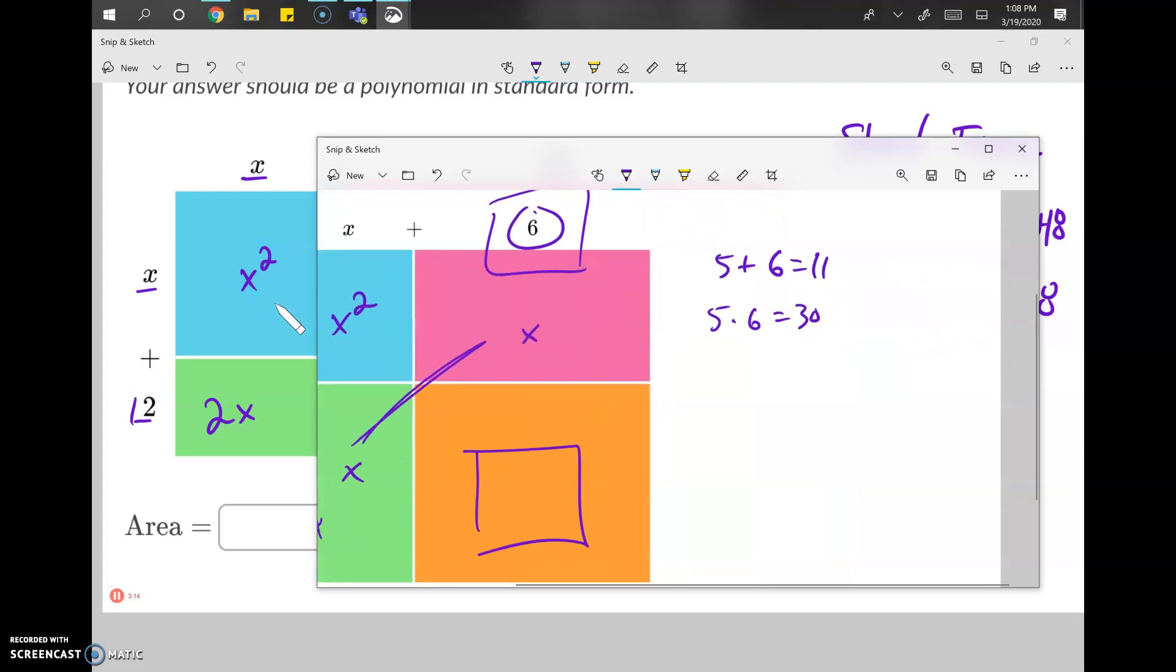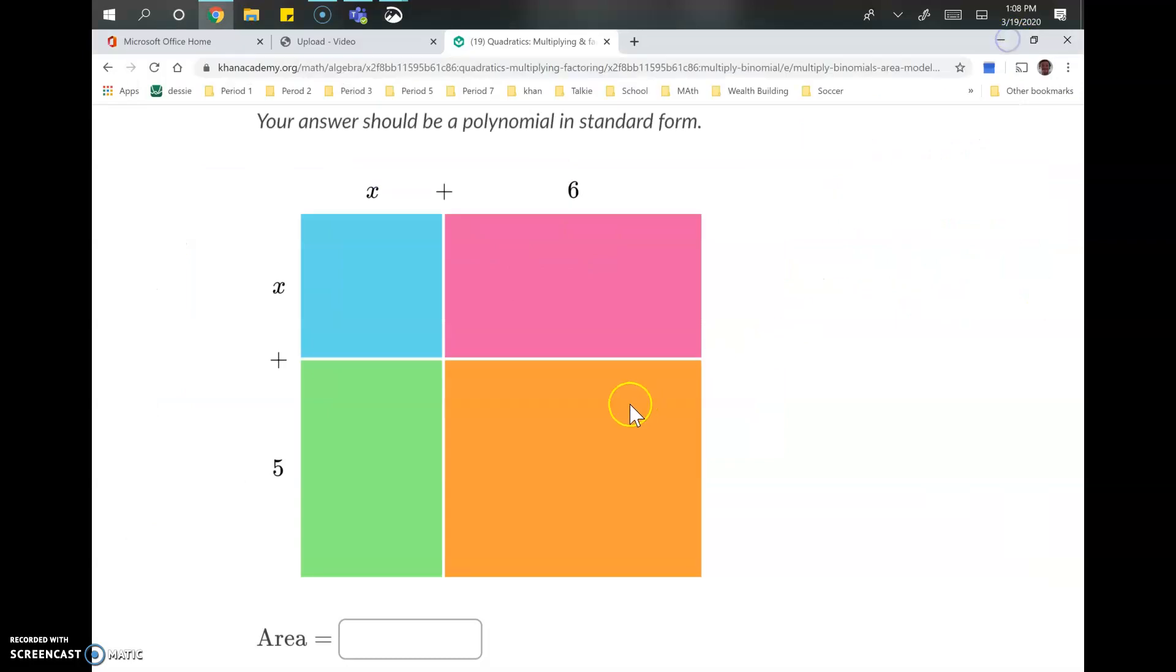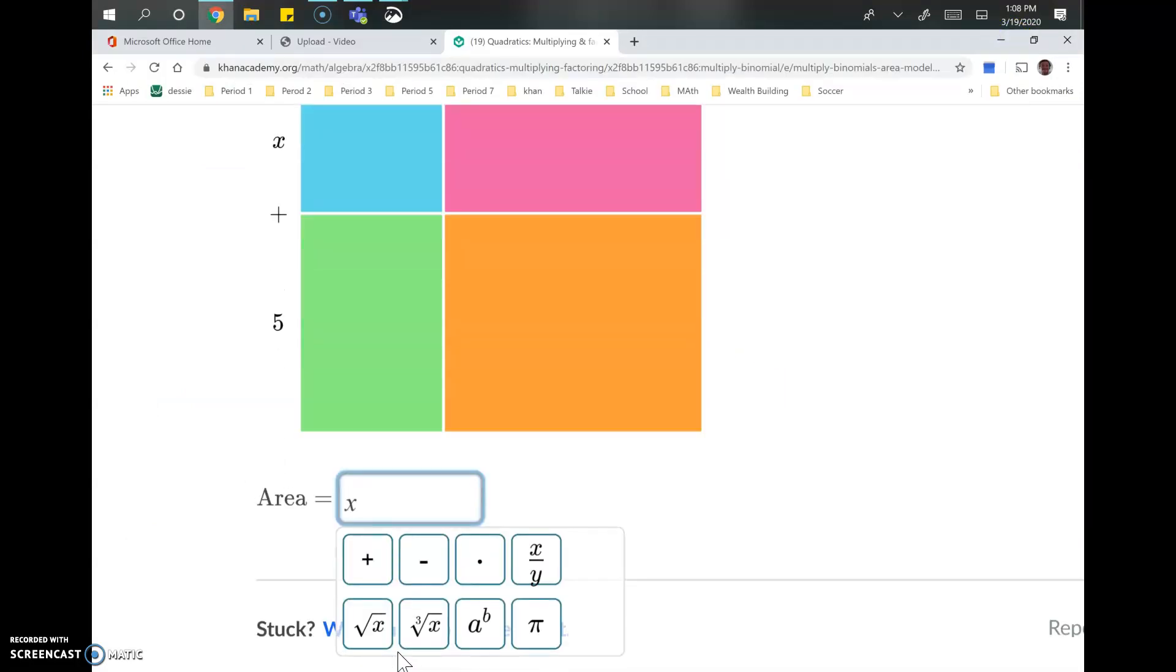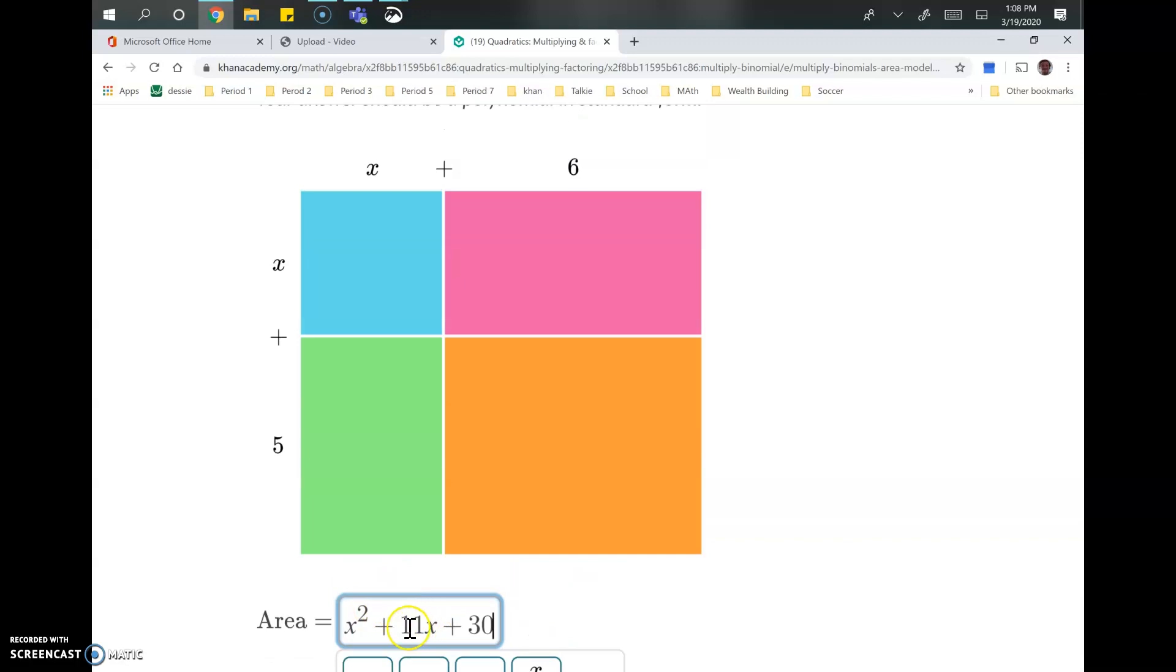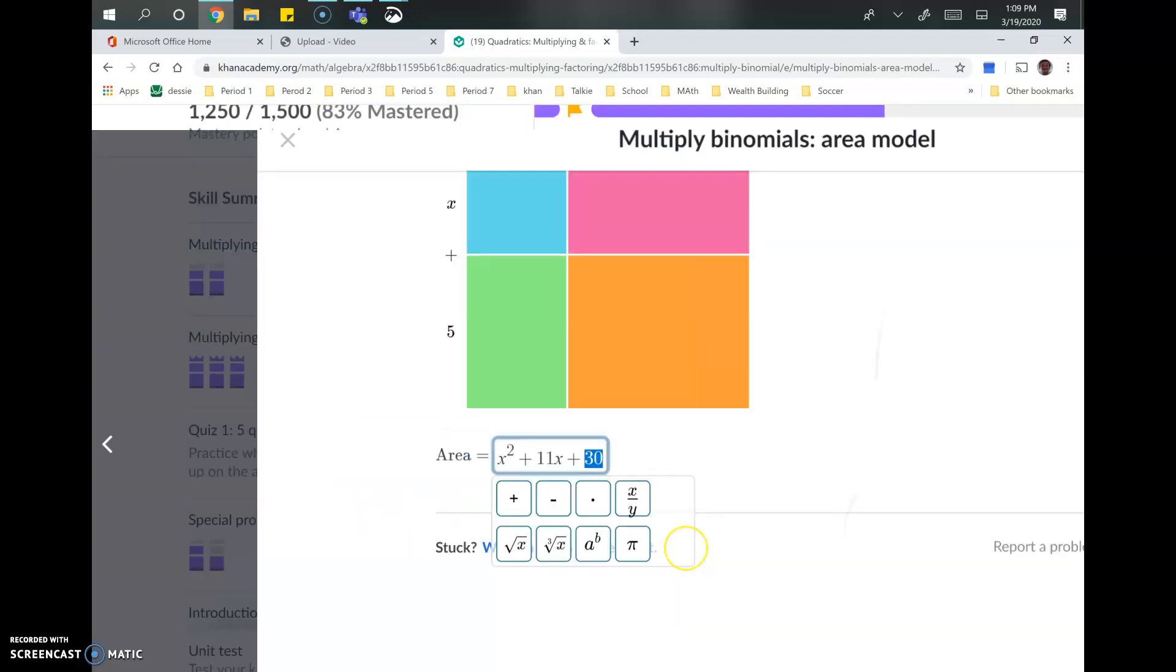And this is helpful for me, because really this is 5x plus 6x, which is 11x, so I've already got the answer. Just by looking at those two numbers, I know the middle term is 11x, and the final term is 30. So we've got x squared plus 11x plus 30. So I just added those numbers to get the middle term. And then I multiplied those two numbers to get the constant, and I'm pretty much done.